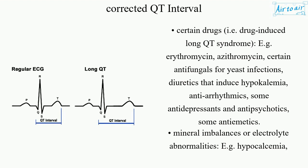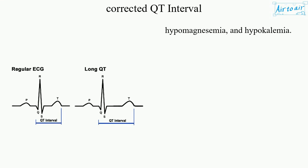Certain drugs causing drug-induced long QT syndrome, e.g. erythromycin, azithromycin, certain antifungals for yeast infections, diuretics that induce hypokalemia, antiarrhythmics, some antidepressants and antipsychotics, and some antiemetics. Mineral imbalances and electrolyte abnormalities, e.g. hypocalcemia, hypomagnesemia, and hypokalemia.